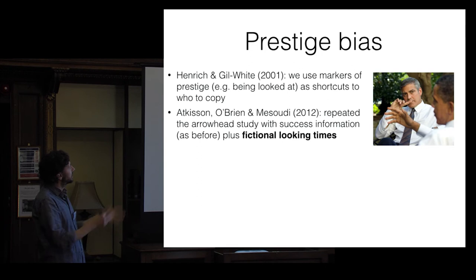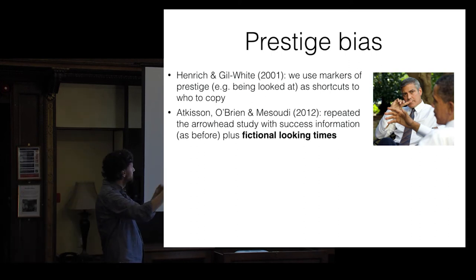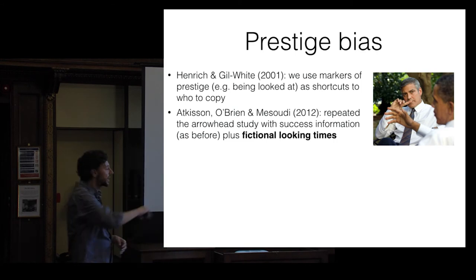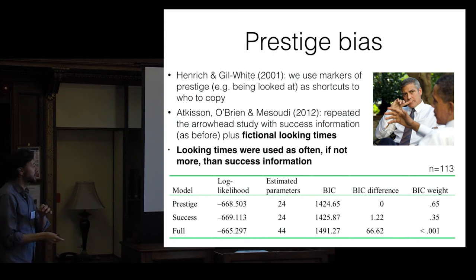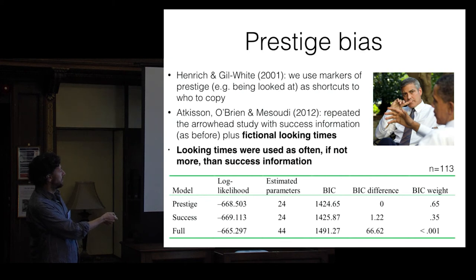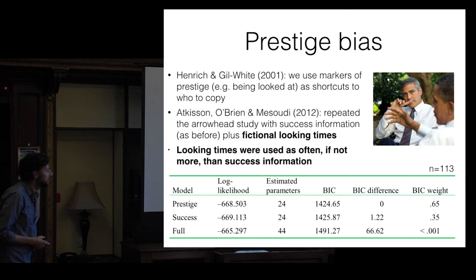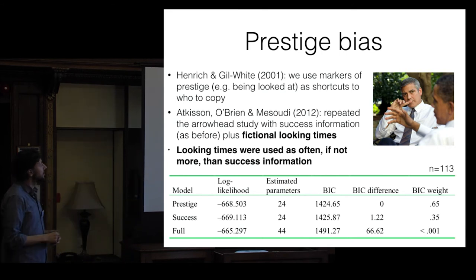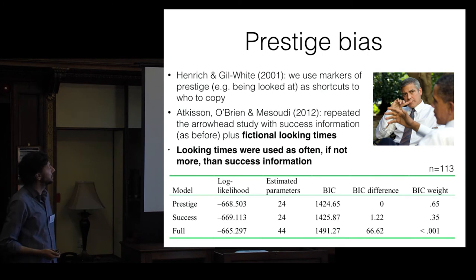We found, to my surprise, that looking times were used as often, if not more, than success information. In the model comparison, there was a 65% chance the model with just prestige looking times fit the data, versus 35% for the model with just success scores. People were basically using these nonsense looking times just as much as the success information. So it's very easy to get people to use minimal cues of prestige. Participants often copy irrelevant cues associated with relevant ones — this fits with developmental psychology work showing that kids will over-imitate, copying too much.